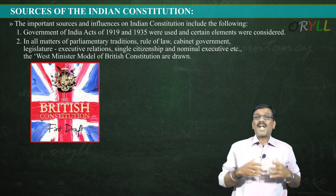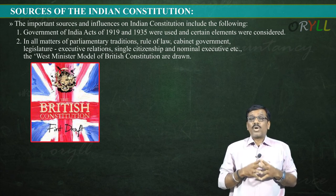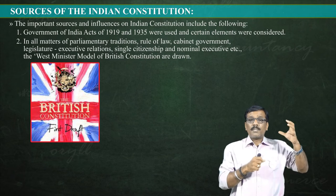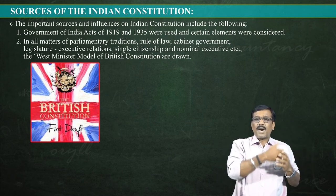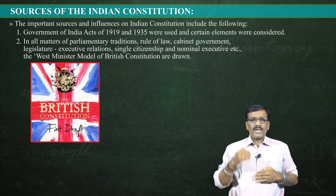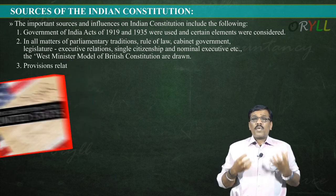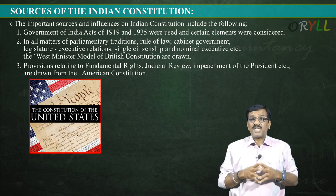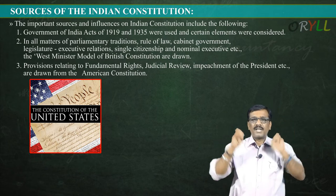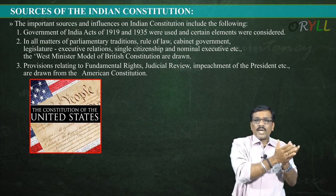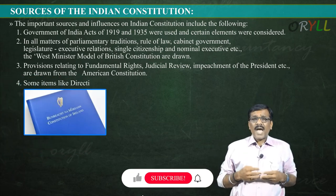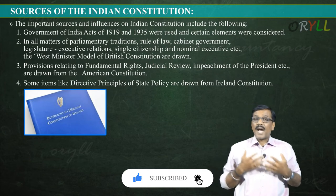The Westminster model — named after the place of the British Prime Minister — provided provisions like parliamentary traditions, rule of law, cabinet government, single citizenship, and nominal executive. Provisions relating to fundamental rights, judicial review, and impeachment of the president are drawn from the American Constitution — each constitution contributing something that suits our country.